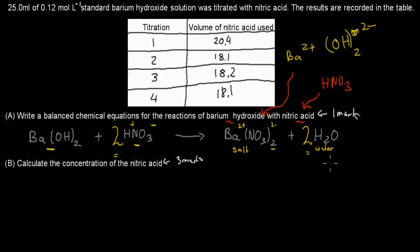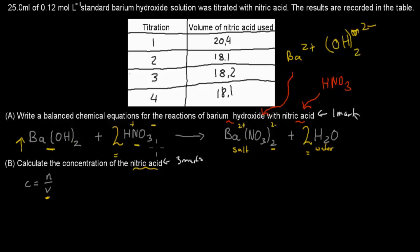This first step is important because it's what we need to answer the second step properly. For Part B, we need to calculate the concentration of nitric acid, which requires volume and number of moles. We have the volume given, but not the moles. However, using the balanced equation above, we can figure out moles of nitric acid once we know the moles of barium hydroxide, since 1 mole of Ba(OH)₂ reacts with 2 moles of HNO₃. We have the volume of Ba(OH)₂ given as 25 mL.